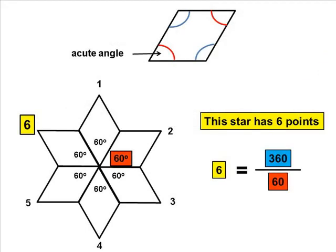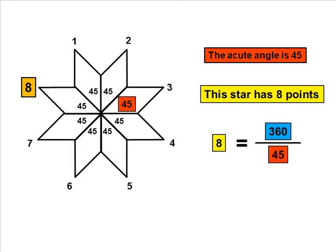If the acute angle is 60 degrees, six rhombuses form a six-pointed star. If the acute angle is 45 degrees, eight rhombuses form an eight-pointed star.